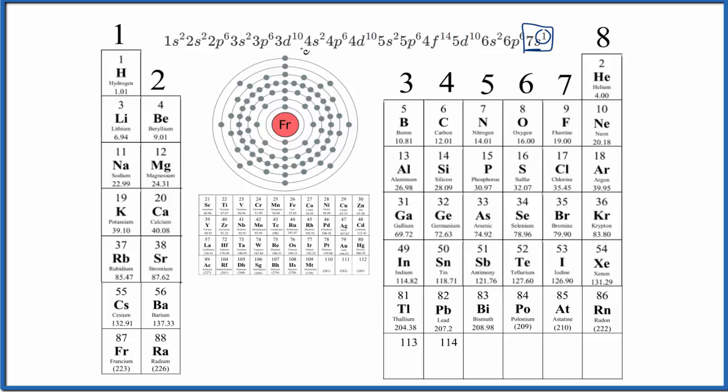And we represent that here in this outer shell, the one valence electron. And that's just like we found when we looked at the group number for francium, one valence electron.